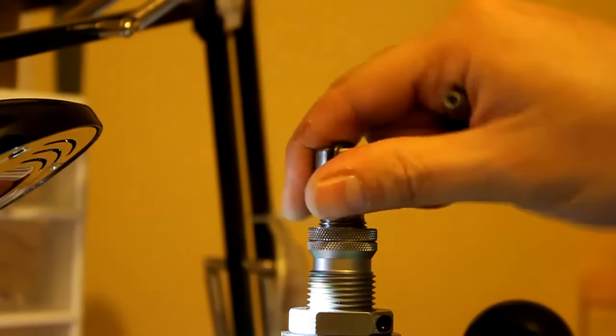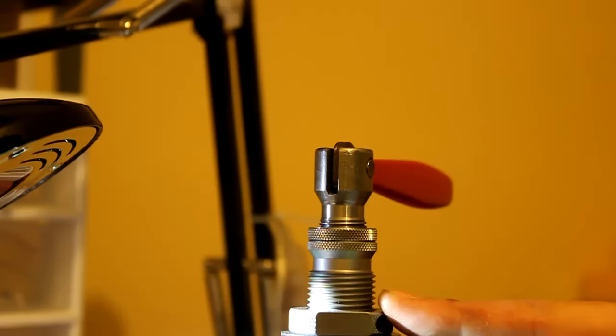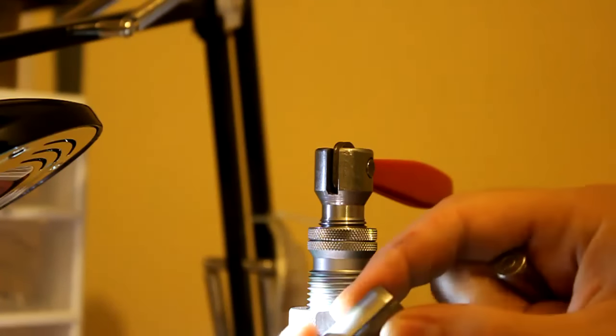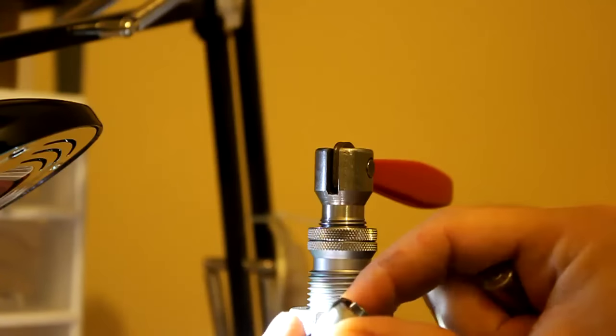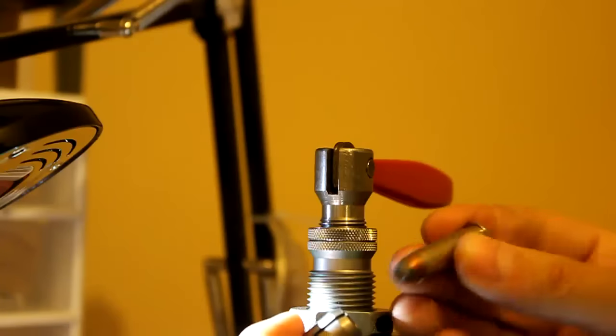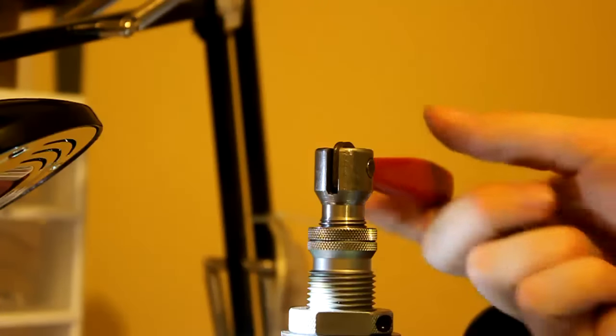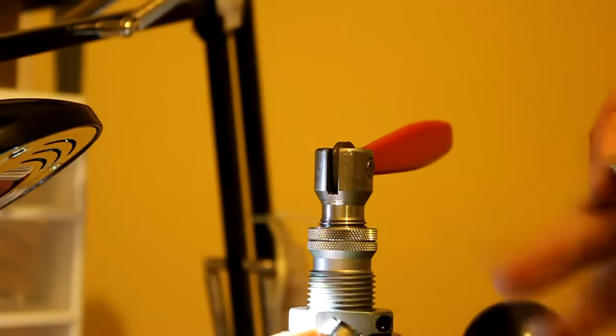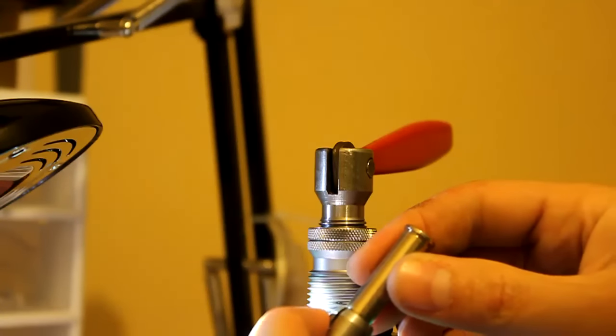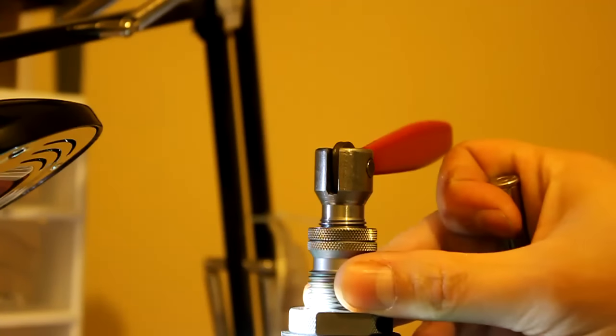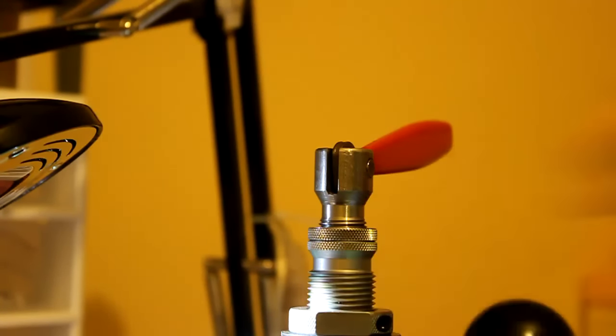Method number two is a collet style puller. This is a die that threads into your reloading press. You then must install the appropriate size collet to match the caliber you're working with. The collet is basically a metal tube with some fingers cut in it that your projectile fits into. When you move this handle, it causes these fingers to squeeze and they'll grab the bullet. At that point you can lower the case and the bullet should stay up inside the collet and you're done.